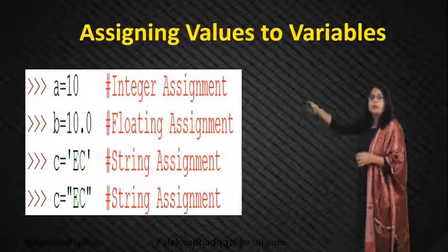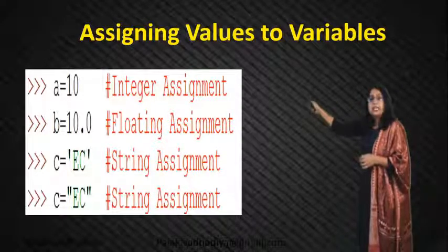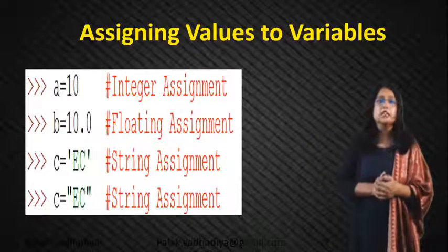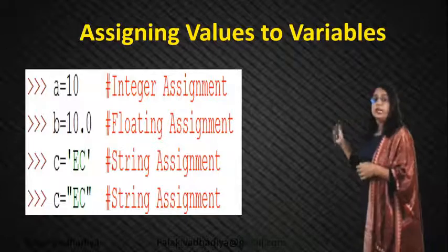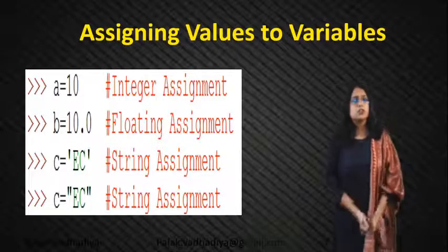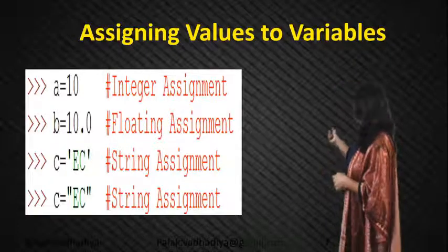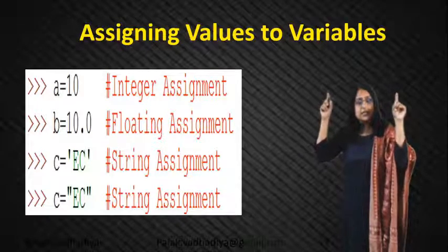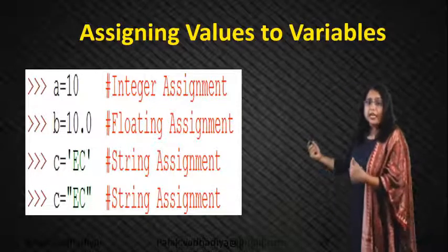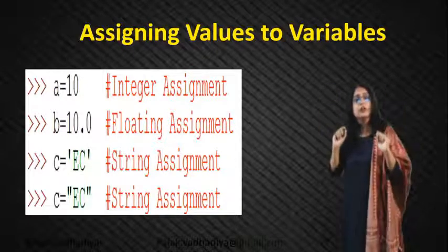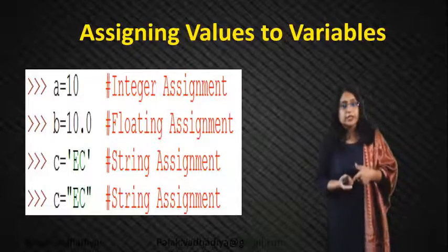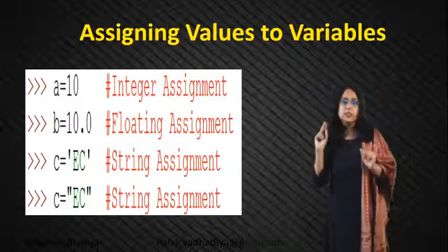Here is a Python command: if I write a = 10, then 10 is an integer number, so this is known as integer assignment. If I use b = 10.0, or 10.5, 20.5 — that is known as a floating assignment. If I write c = 'ec' with single quotes, that is a string assignment. Similarly, if I use double quotes for the same variable c, that is also a string assignment. So in Python, when you want to assign a string, you can use single quotes or double quotes — both are the same.